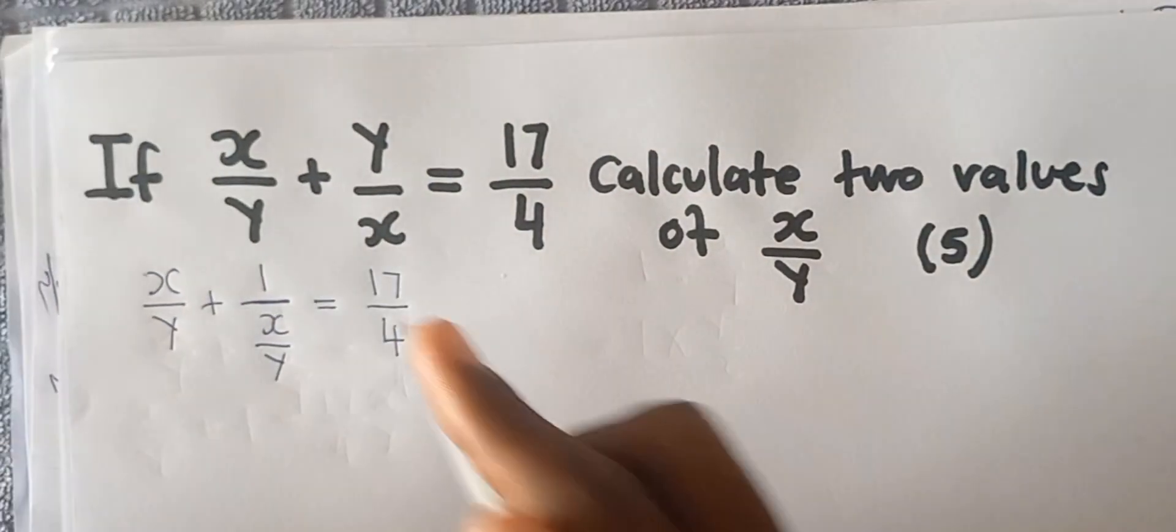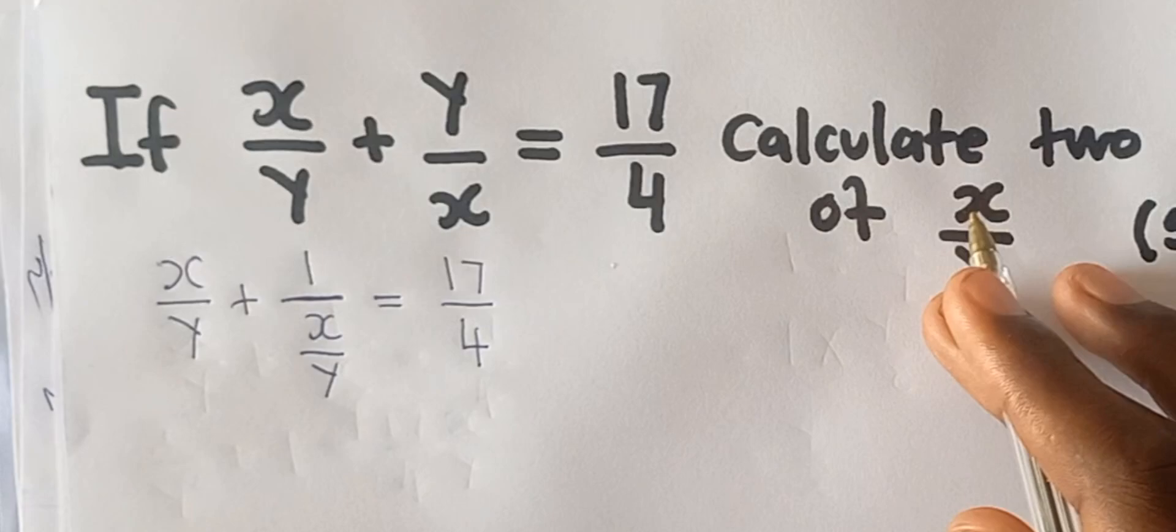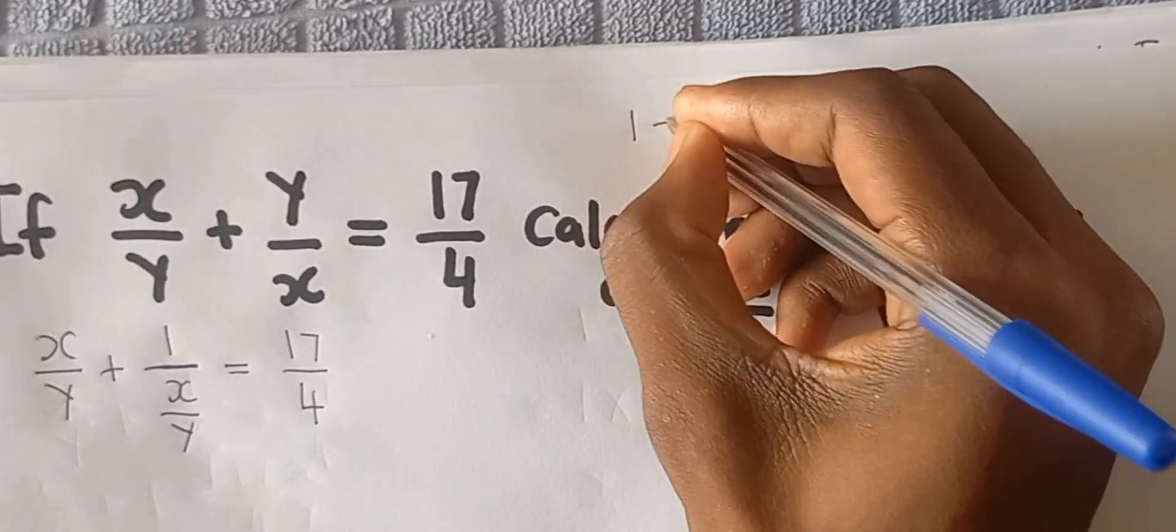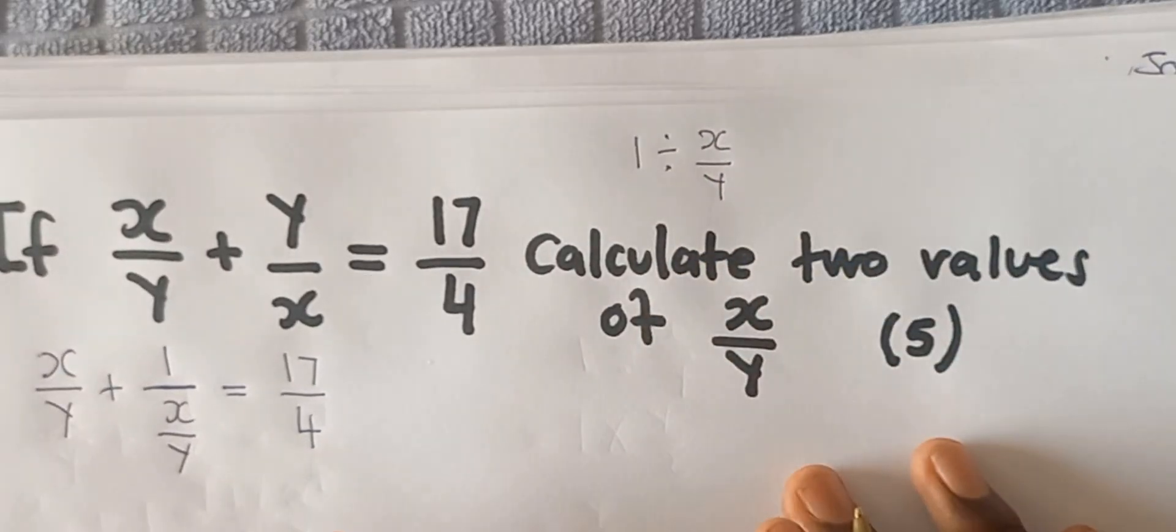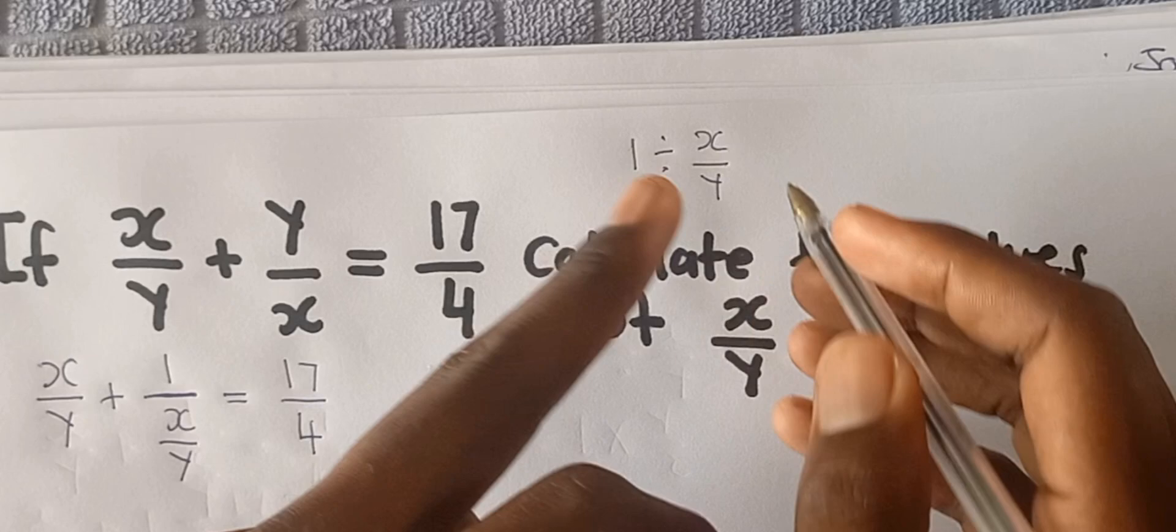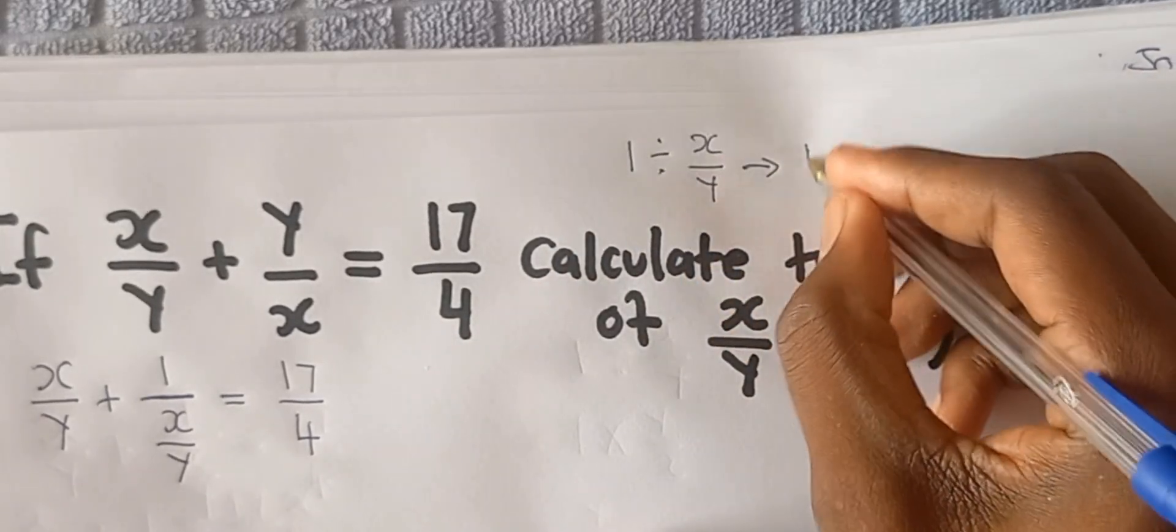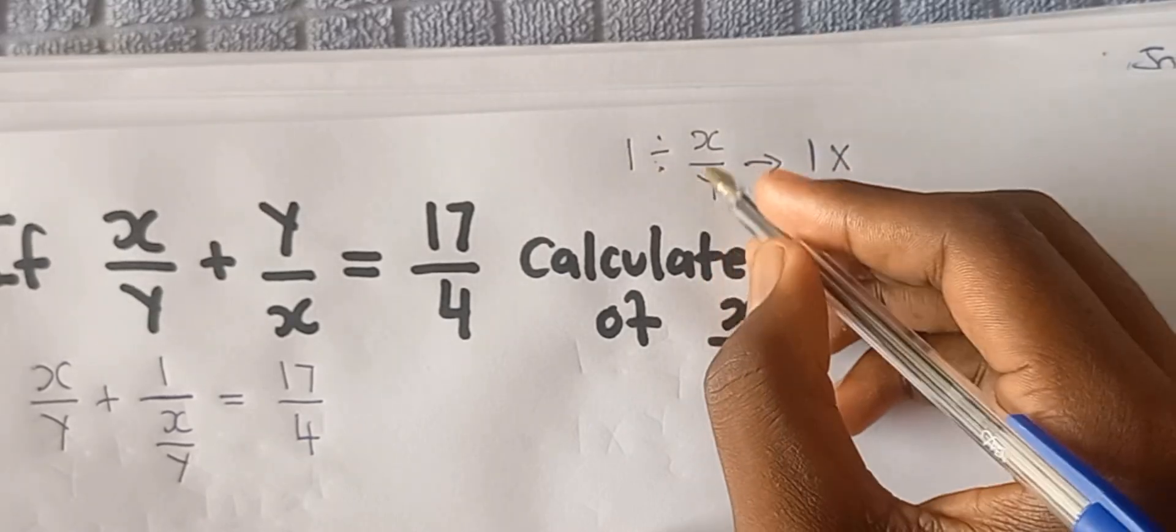Pay close attention: this 1 over x plus y is still the same as 1 divided by x over y. Let me explain - write it down here. This is the same as 1 divided by x over y, I hope this is clear. So if we want to use the law of reciprocal, what do we do? We're going to change this division to multiplication.